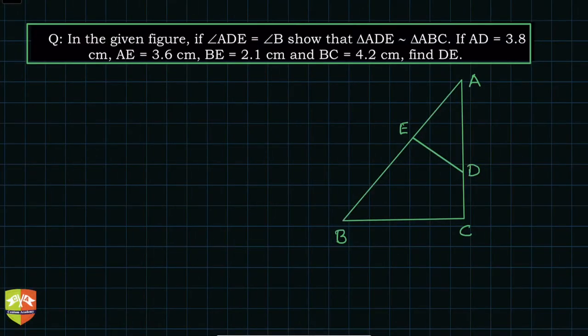Hello friends, welcome to another session on problem solving in the topic triangles. The given question says that in this given figure, angle ADE equals angle B. So while I am reading the question, I'll also mark it for you all to understand. So angle ADE equals angle B, we have to show that triangle ADE is similar to triangle ABC.